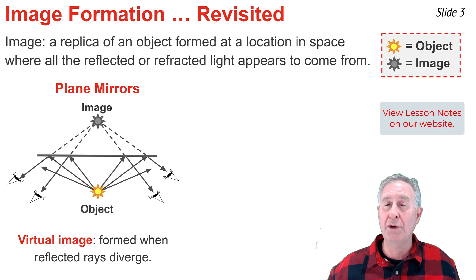This type of image is known as a virtual image, and it is always formed when the reflected light rays diverge after reflecting off the mirror.